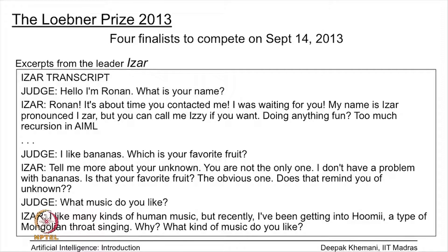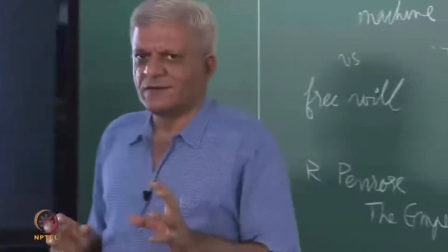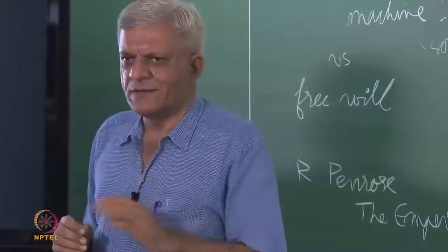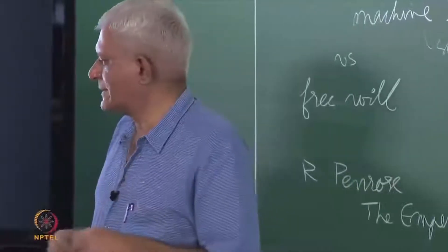The judge mentions getting into Khoomei, a type of Mongolian throat singing. So you have to put certain amounts of knowledge into your system to be able to convince the judge.